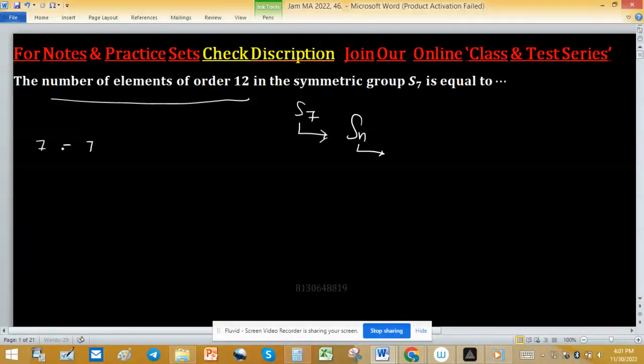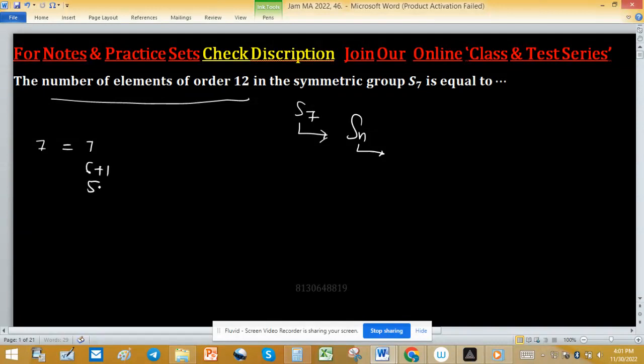...of 7 are: 7, 6 plus 1, 5 plus 2, 4 plus 3, and other partitions you can do. But in this partition when 4 plus 3 or 3 plus 4, lcm of 4, 3 is 12, so only this partition...